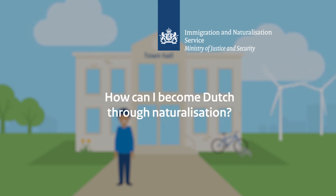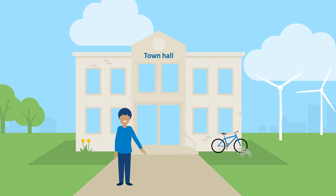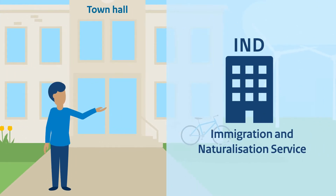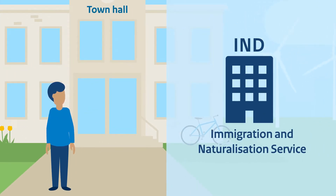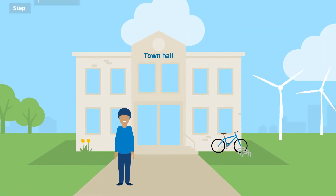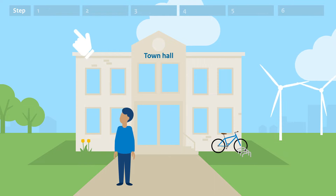How can I become Dutch through naturalization? You would like to become a Dutch citizen. Then you can apply for naturalization at the town hall where you live. The IND, the Immigration and Naturalization Service, will decide on your application. In this animation, we'll take you through the steps for naturalization.